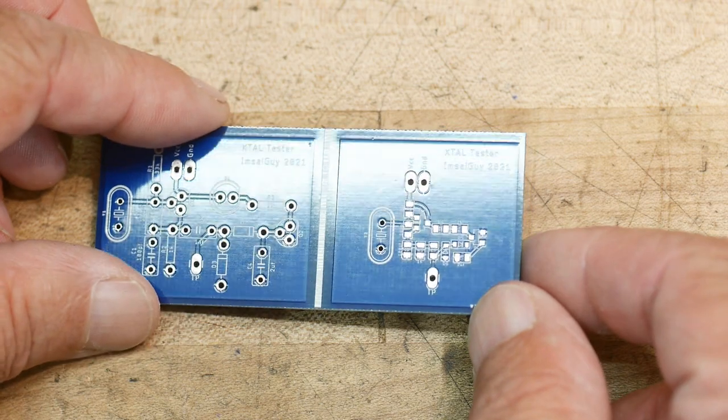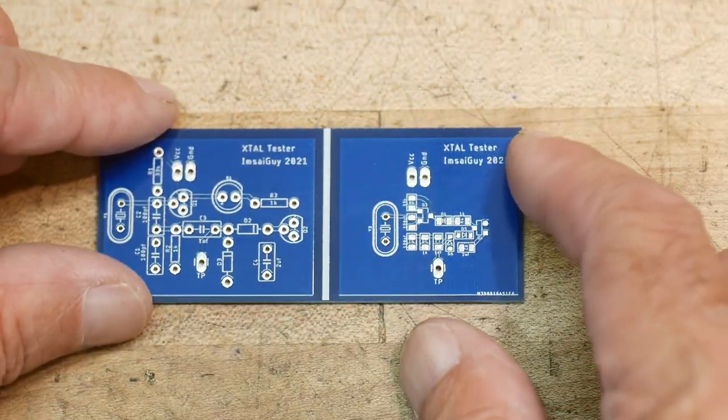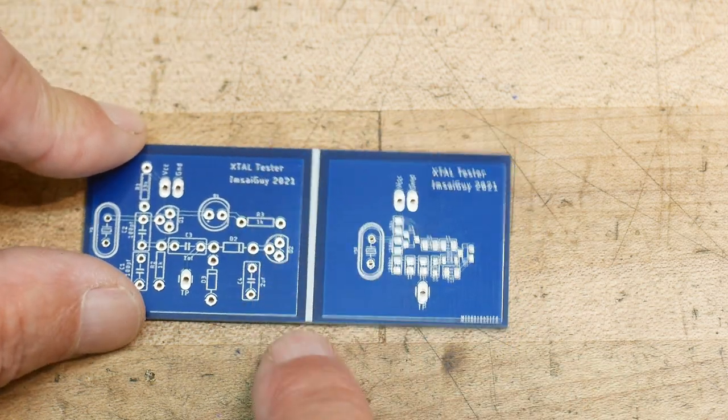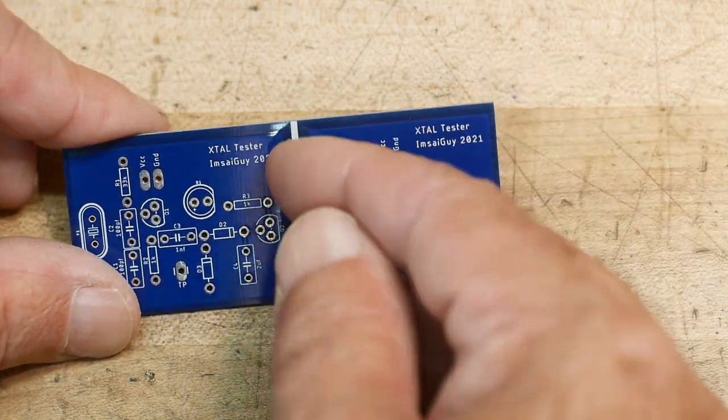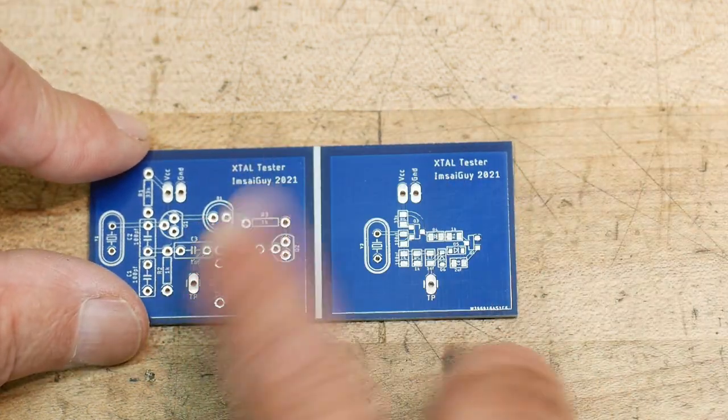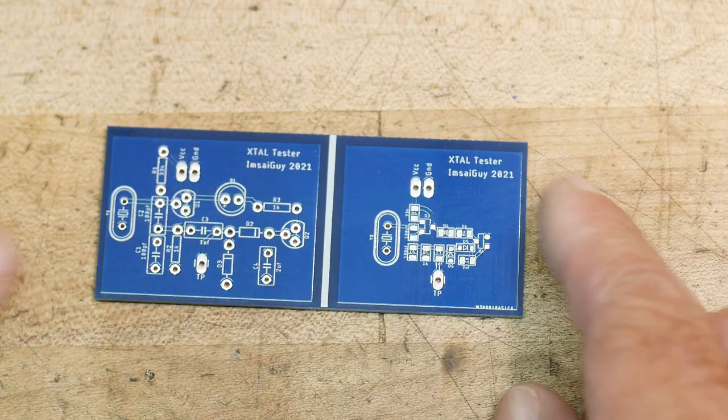So it just has a silk screen line right now. You can take it to a bandsaw or hacksaw and separate the two if you want to. It's got two completely separate circuits, two completely separate ground planes.